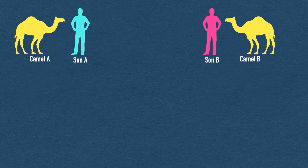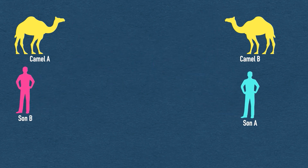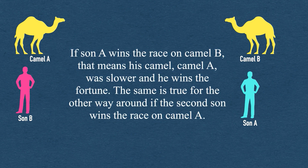The wise man tells them to switch camels. Each son owns a camel — call them camel A and camel B. Neither son wants to enter the city first because that means their own camel was faster and they won't get the fortune. When they switch camels, son A rides camel B and son B rides camel A. Now each wants the camel they are riding to arrive first. If son A wins on camel B, then camel A was slower, and son A wins the fortune. The wise man's advice: switch the camels.